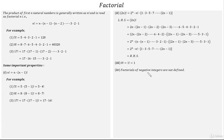Factorial property number 4: Factorial of negative integers are not defined. Or you can say that factorial of only positive integers and 0 are defined, and for all other numbers it is not defined. Thank you.